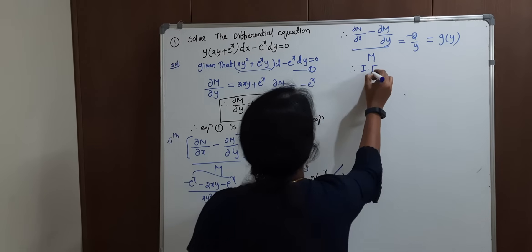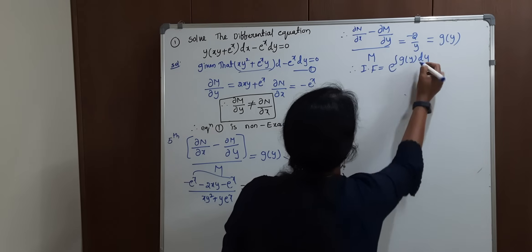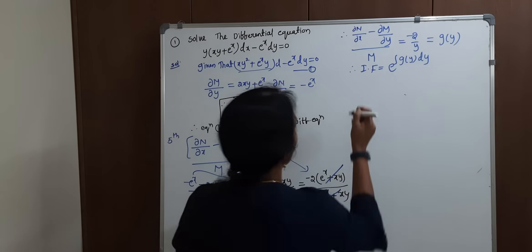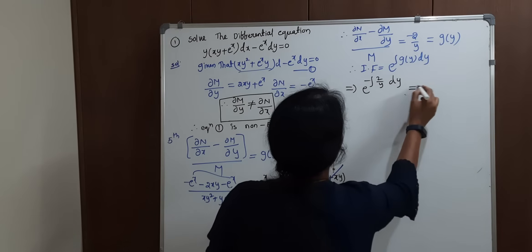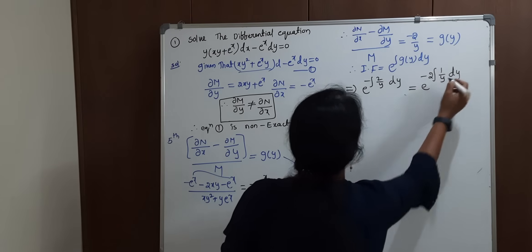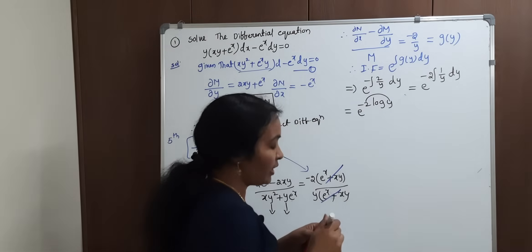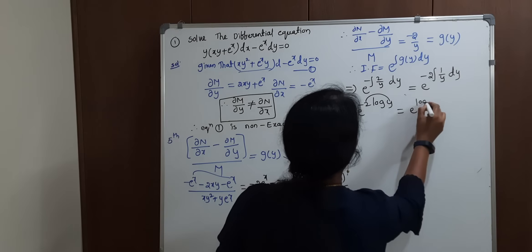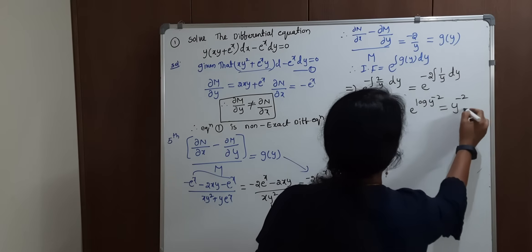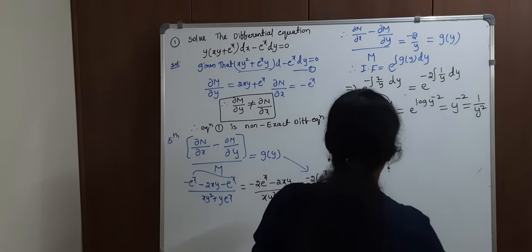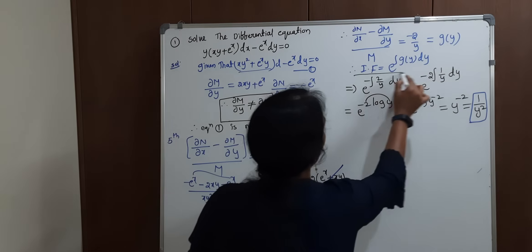Therefore, our integrating factor is e to the power of integral of G(y) dy. In terms of y: e to the power of integral of minus 2 by y dy. Taking constant minus 2 out: integral of 1 by y dy gives log y. So the integrating factor is e to the power of log y to the power minus 2. Since e and log cancel, the integrating factor is y to the power minus 2, which is 1 by y squared.